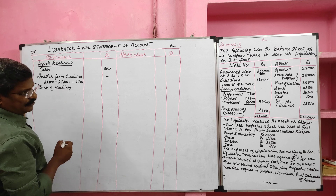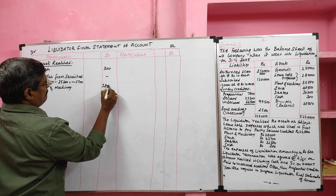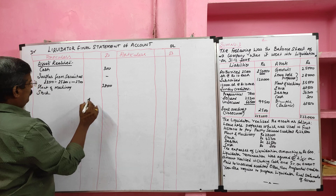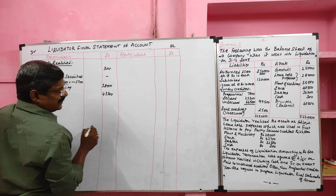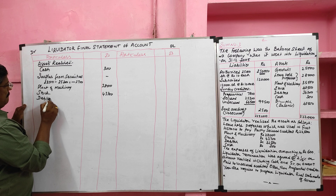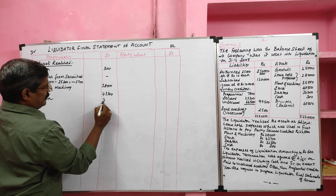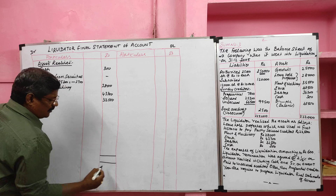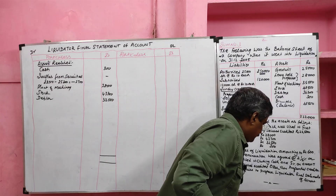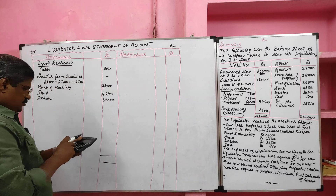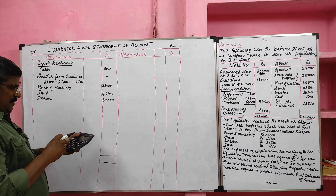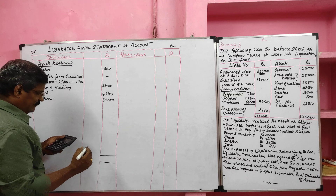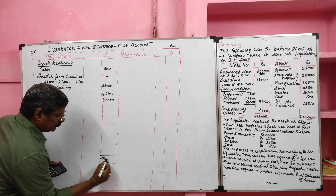Plant and machinery realized value: rupees 28,000. Stock realized value: rupees 43,700. Debtors realized value: rupees 32,500. Cash was already recorded. Now we total all realized assets: 300 plus 28,000 plus 43,700 plus 32,500, giving a total realized asset value of rupees 1,04,500.